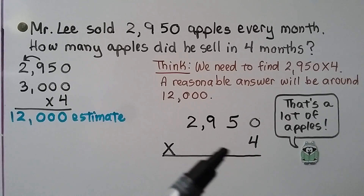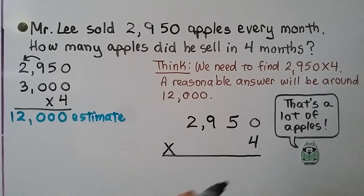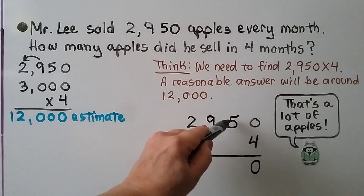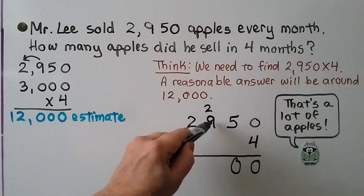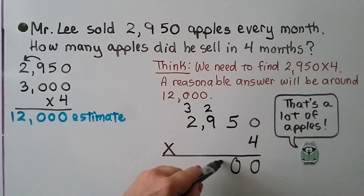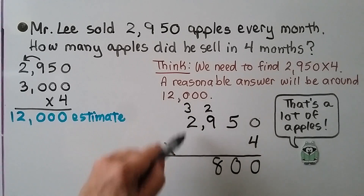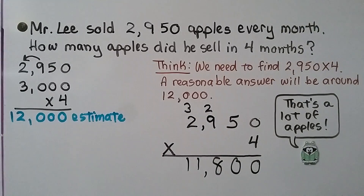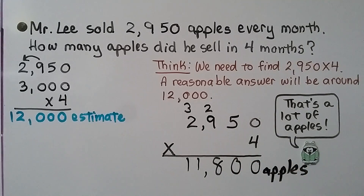Let's multiply. We start with the ones place: four times zero is zero. Four times five is 20 — regroup the two, put the zero down. Four times nine is 36, plus two more is 38 — regroup the three, put the eight down. Four times two is 8, plus three more is 11. We get 11,800 apples. We label it apples.